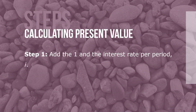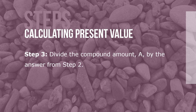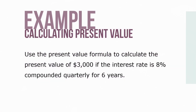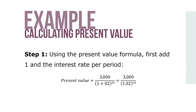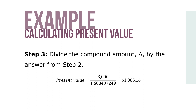Here are the steps to calculating present value. Step 1: Add 1 and the interest rate per period. Step 2: Raise that sum to the nth power using the Y^x key. Step 3: Divide the compound amount A by the answer from step 2. For example, use the present value formula to calculate the present value of $3,000 at 8% interest compounded quarterly for 6 years. Step 1: Add 1 and the interest rate per period. Step 2: Raise the sum to the nth power. Step 3: Divide the compound amount by the result. That gives a present value of $1,865.16.